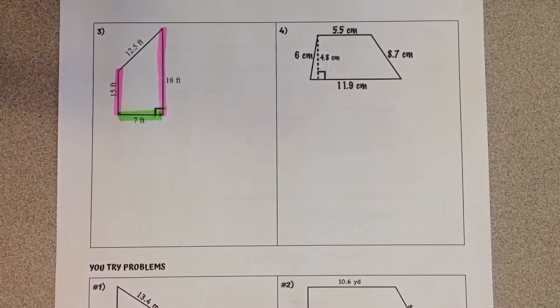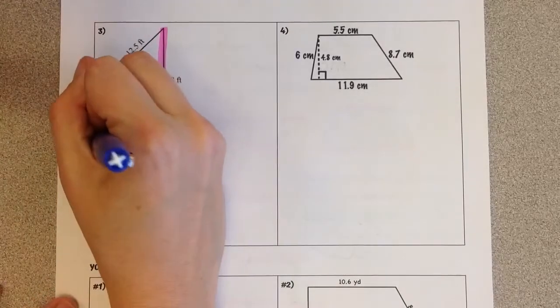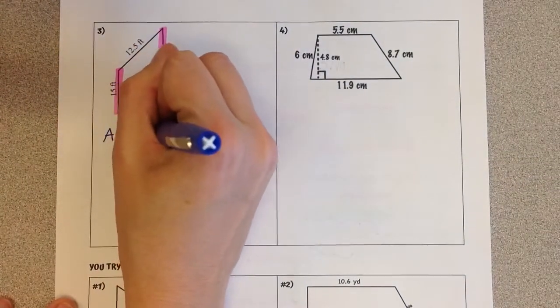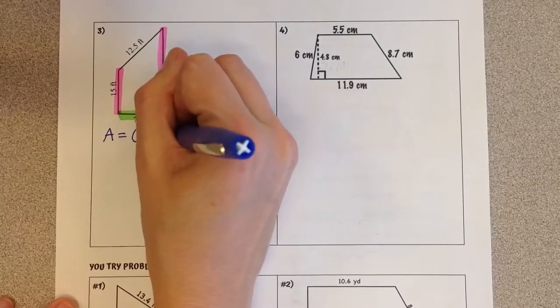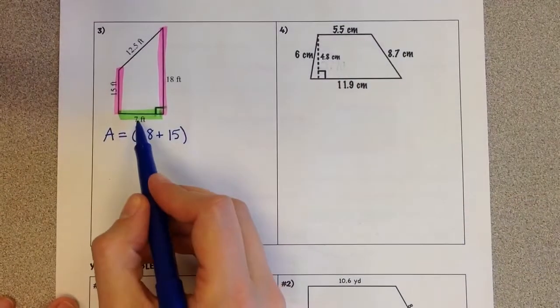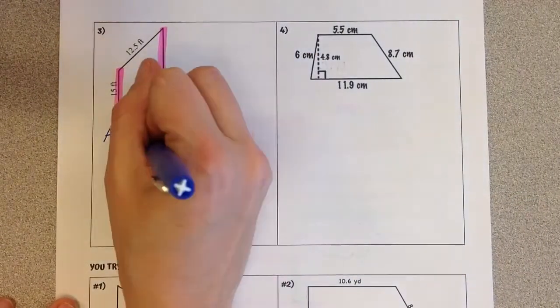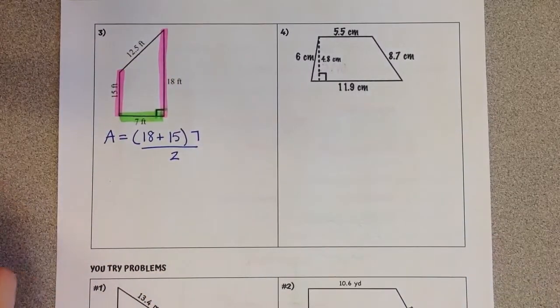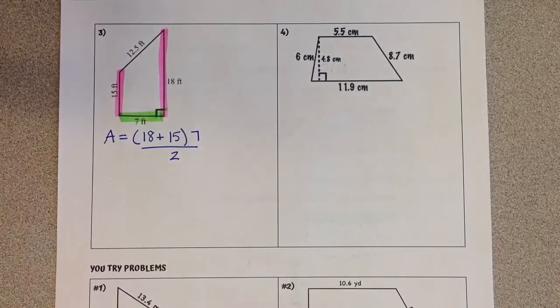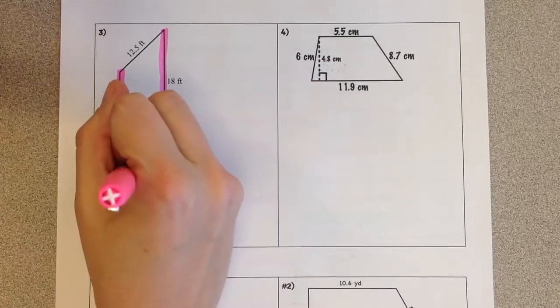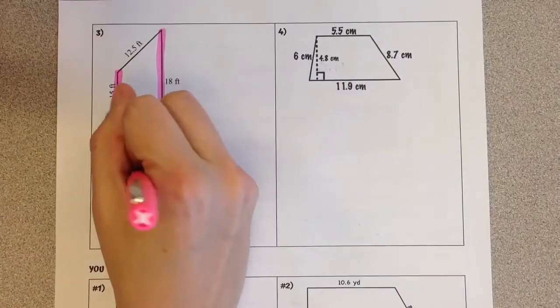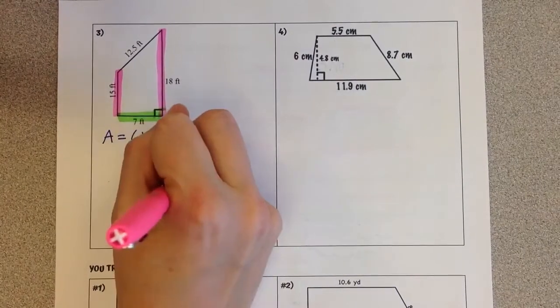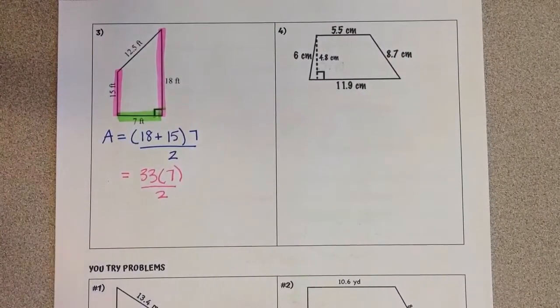Let's plug in to our formula. Area equals base 1, which is 18, plus base 2, which is 15, times the perpendicular height, which is 7, divided by 2. So we're going to add first, 18 plus 15 is 33, times our height of 7, divided by 2.